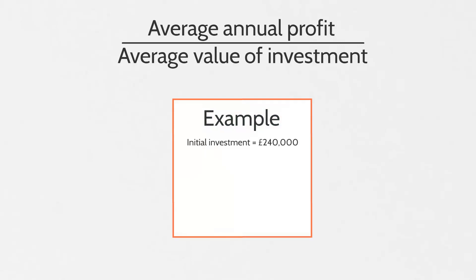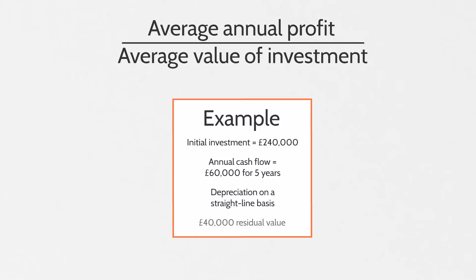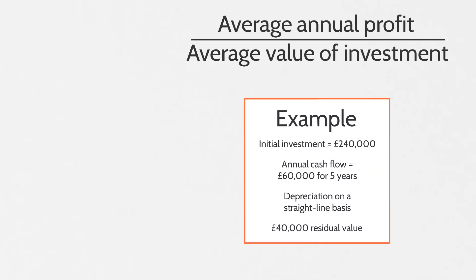We have a project here, and the initial investment of that project is going to be £240,000. The annual cash flow is £60,000 every year for five years — that's the length of the project. The investment, whatever is being purchased for this project, is depreciated on a straight-line basis — that's the same amount every year, as opposed to a reducing balance which is based on a percentage. The residual value of this project at the end of those five years is £40,000.